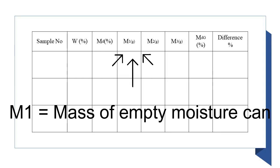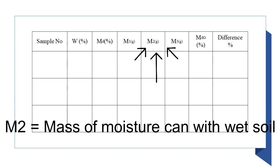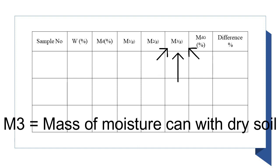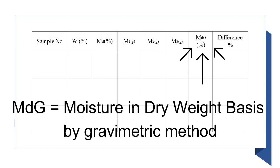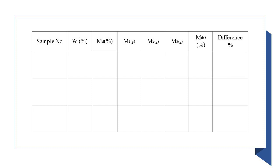M1 is the mass of the moisture can. M2 is the mass of the moisture can with wet soil. M3 is the mass of the moisture can with dry soil. Md is the moisture percentage in dry weight basis obtained by the gravimetric method. The difference percentage is the difference between the moisture content obtained from the gravimetric method and the calcium carbide method.